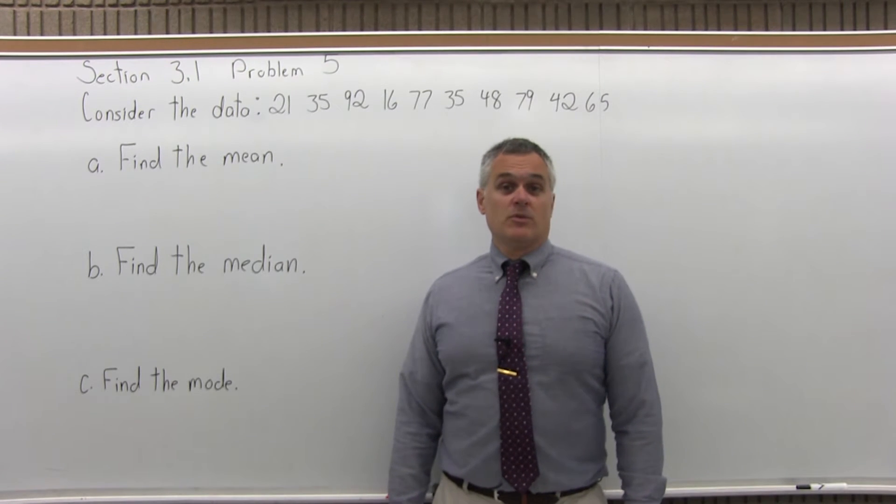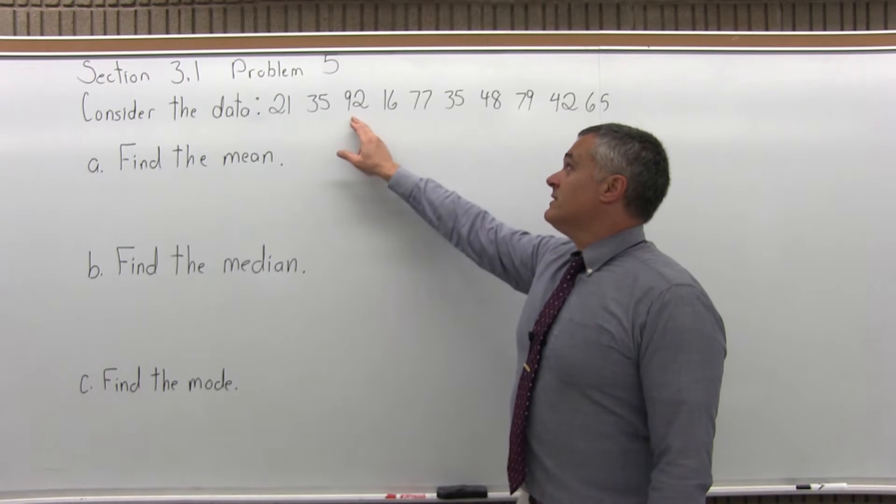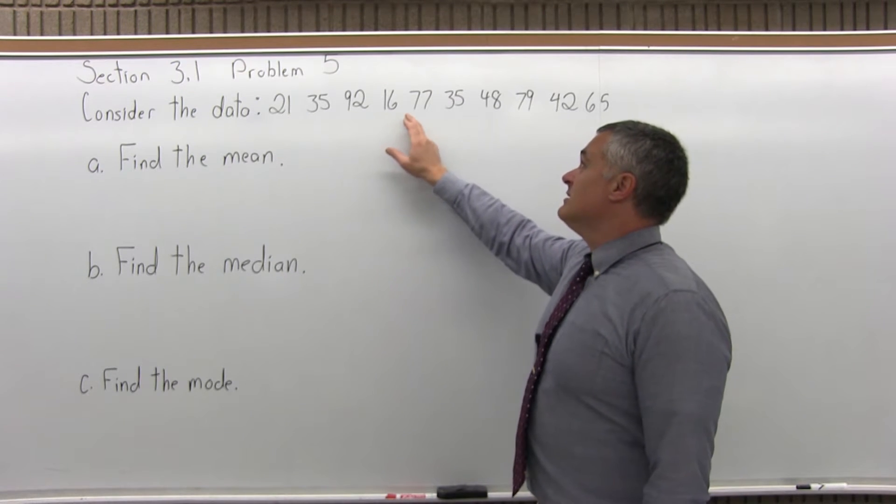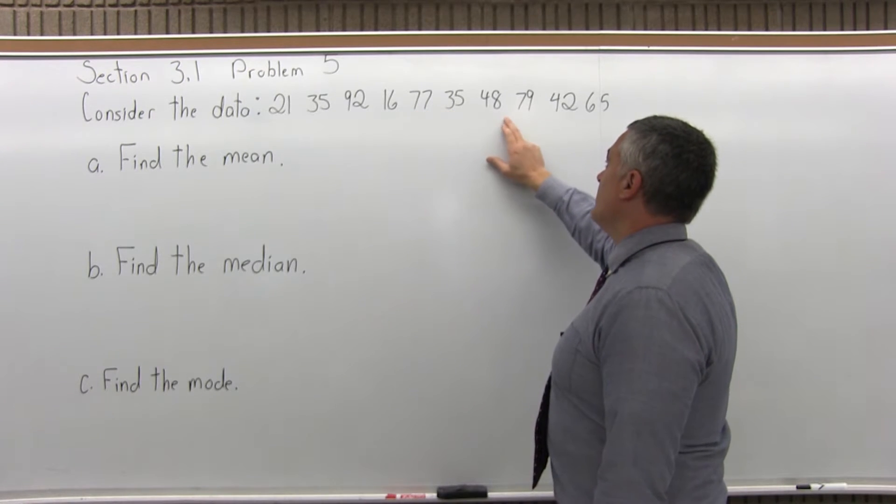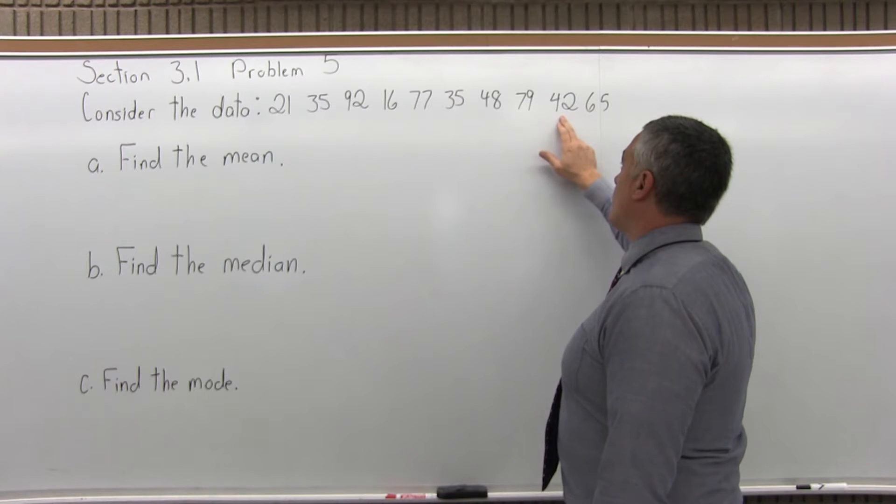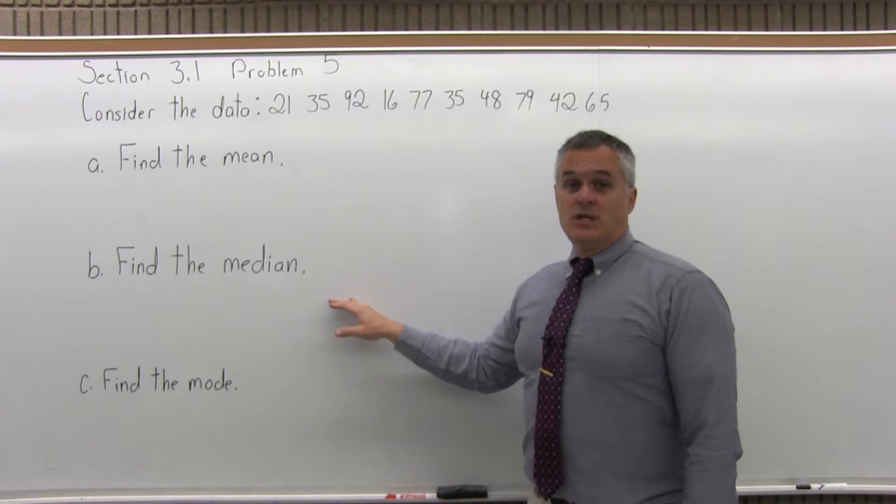This is Section 3.1, Problem number 5. It says, consider the data 21, 35, 92, 16, 77, 35, 48, 79, 42, and 65. Find the mean, find the median, find the mode.